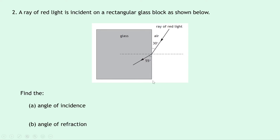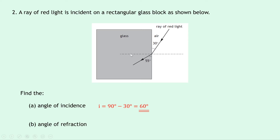Question 2 is a similar question. A ray of red light is incident on a rectangular glass block. This time we're using numbers rather than letters. For part A, the angle of incidence is the angle between the incident ray and the normal. We don't have that labelled directly, so we work it out: the normal makes a 90-degree angle with the surface, so the angle of incidence is 90 minus 30, giving 60 degrees. For part B, the angle of refraction is 90 minus 55, which gives 35 degrees.